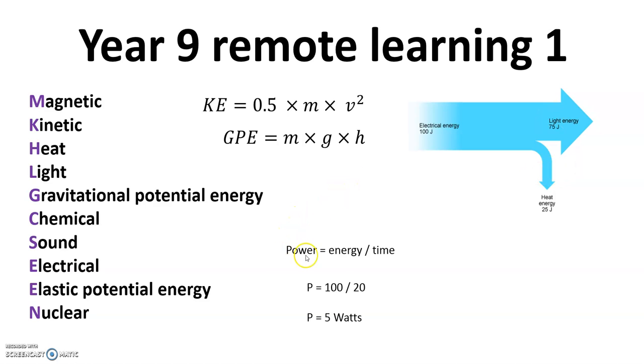And then our calculation, we've got power equals energy divided by time, where power equals 100 joules divided by 20 seconds. 100 divided by 20 is 5 watts. You can write that as 5 W.